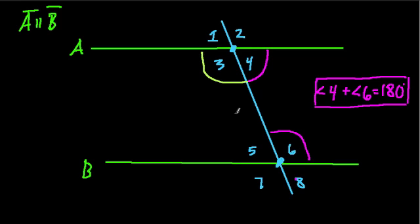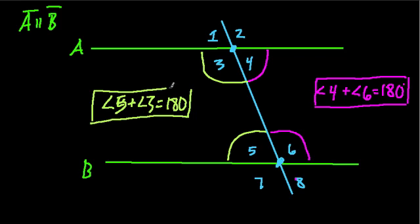On this side of the transversal, angles 3 and 5, right? There are two interior angles, so 3 and 5, also add up to 180 degrees. And that's going to be helpful in many problems that you encounter.